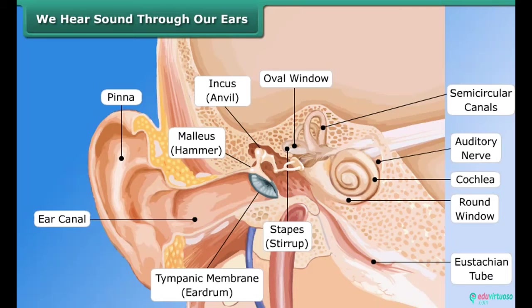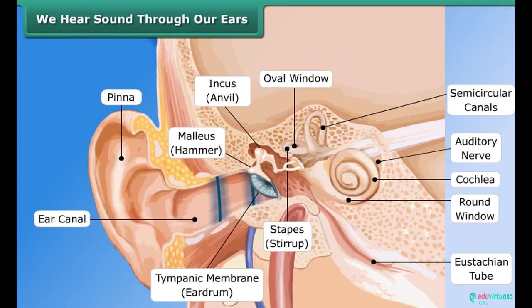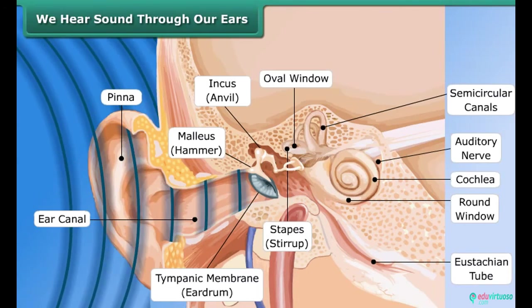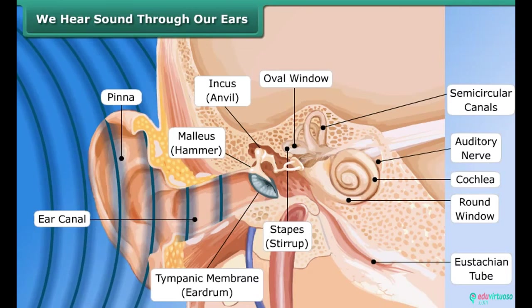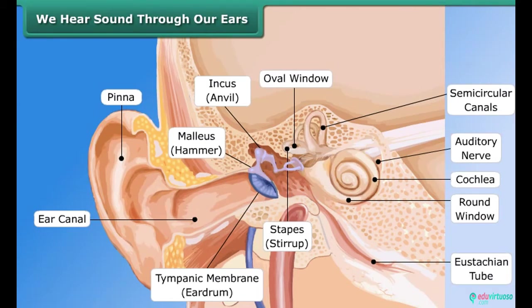We hear sound through our ears. The shape of the outer part of the ear is like a funnel. Sound enters and travels down a canal at the end of which a thin membrane is stretched tightly called eardrum. Sound vibrations make the eardrum vibrate and the eardrum sends vibrations to the inner ear and through inner ear it goes to the brain. This is how we hear sound.